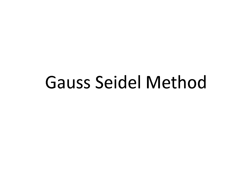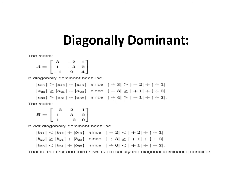Today we are going to learn the Gauss-Seidel method. In this method, you will get equations to solve and you have to find the values of the variables. The first step is to create the coefficient matrix and check whether it is diagonally dominant or not.